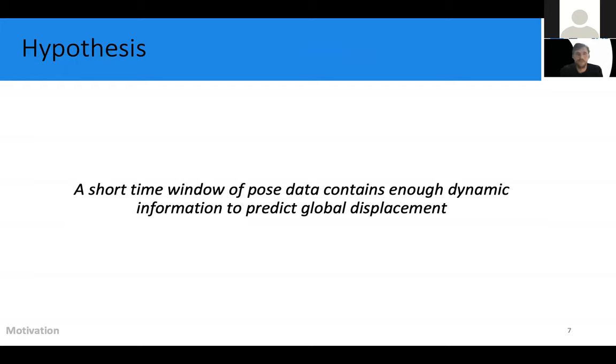So in this work, we propose a data-driven solution to the global position estimation problem. We hypothesize that a short time window of pose data contains enough dynamic information about the character to predict its global displacement. By leveraging the power of function approximators, such as neural networks, we can then learn a mapping between this local information and the global position.